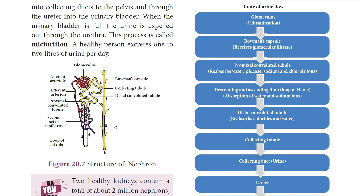Nephrons are the structural and functional units of kidneys; each kidney consists of more than one million nephrons. A nephron has two regions: the renal corpuscle (Malpighian corpuscle) and the renal tubule. The renal corpuscle consists of the Bowman's capsule, which contains a bunch of capillaries called the glomerulus. Blood enters the Bowman's capsule through the afferent arteriole and leaves through the efferent arteriole. The Bowman's capsule continues as the renal tubule, which has three regions: the proximal convoluted tubule, the U-shaped Henle's loop, and the distal convoluted tubule. The distal convoluted tubule opens into the collecting tubule, which collects urine from the nephrons and leads it into the ureter.